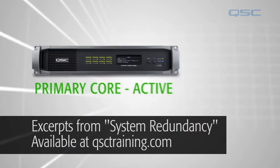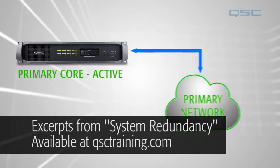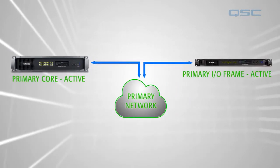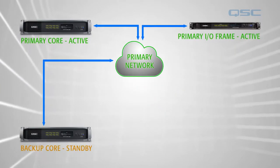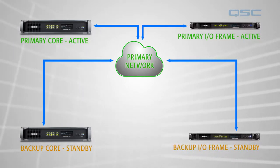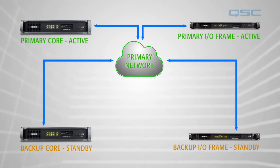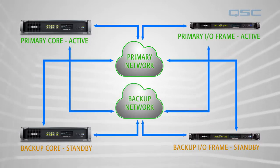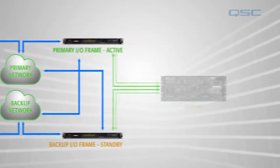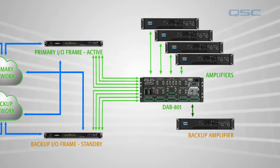In a basic signal path, your core is connected to your network through which it communicates with any I/O frame. You can have a backup core on your network as well as a backup I/O frame, and since every core and every I/O frame has two Ethernet ports, you can also employ a backup network. In addition, you can have amplifier redundancy with the help of QSC's DAB801, which is the data port amplifier backup panel.